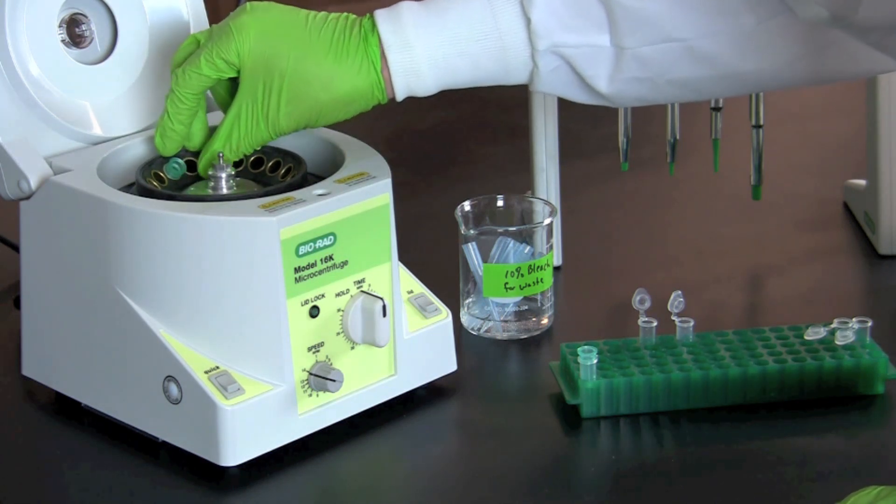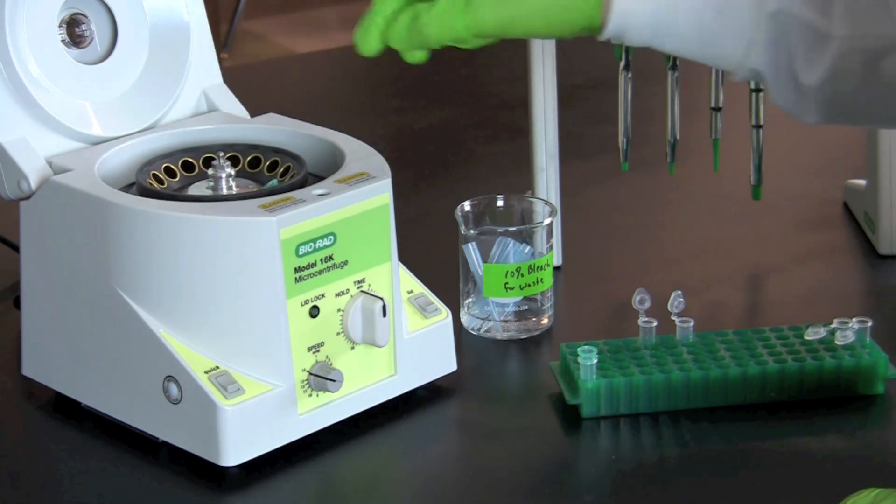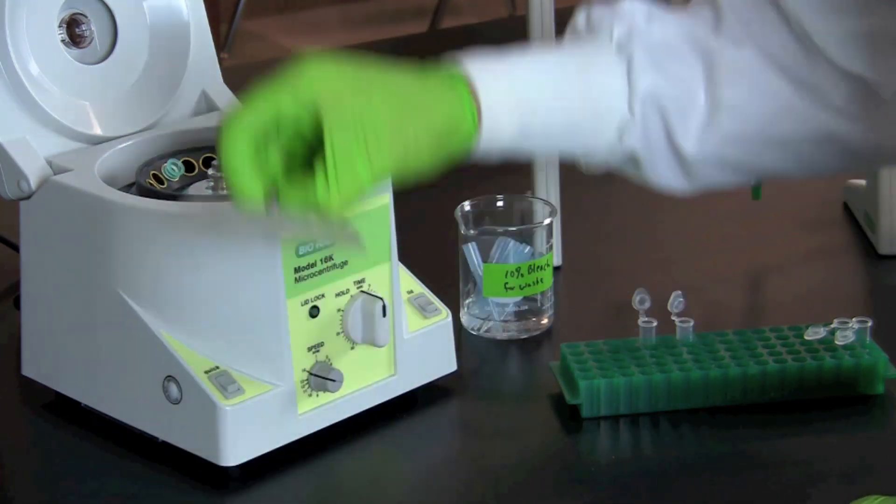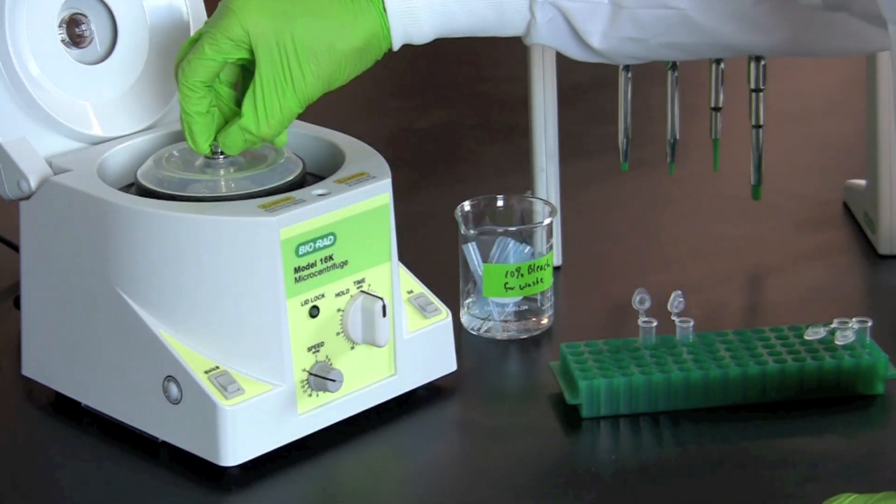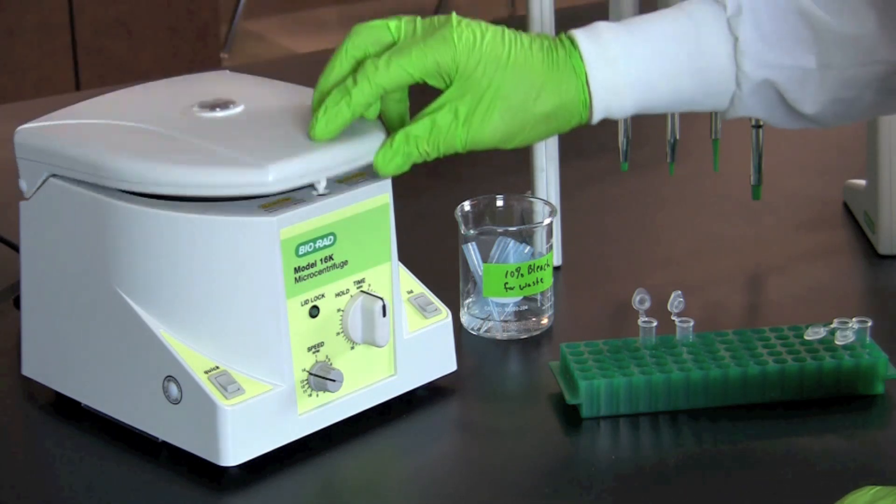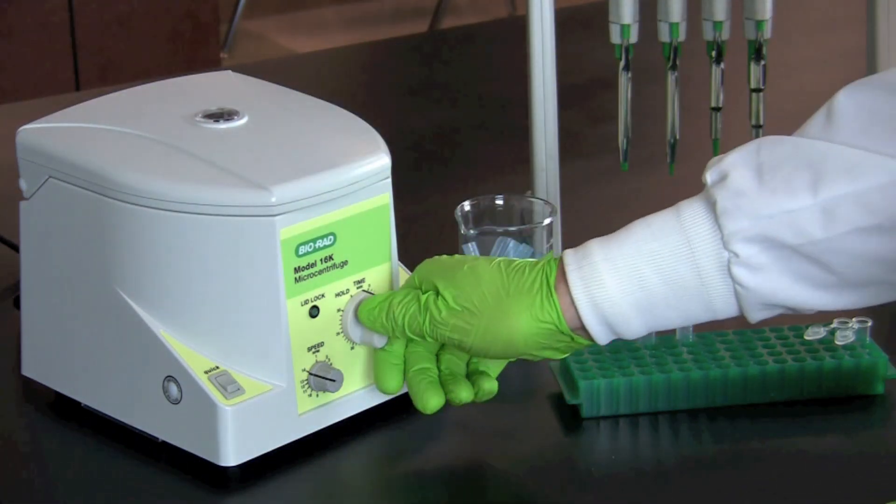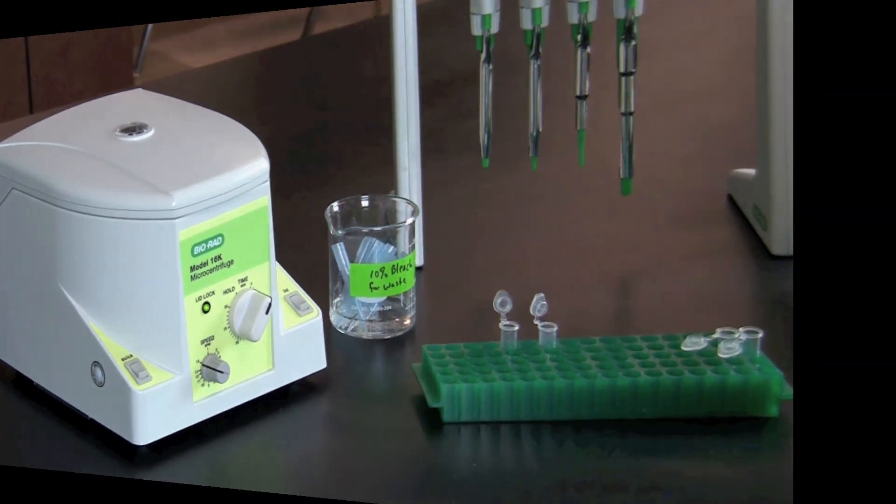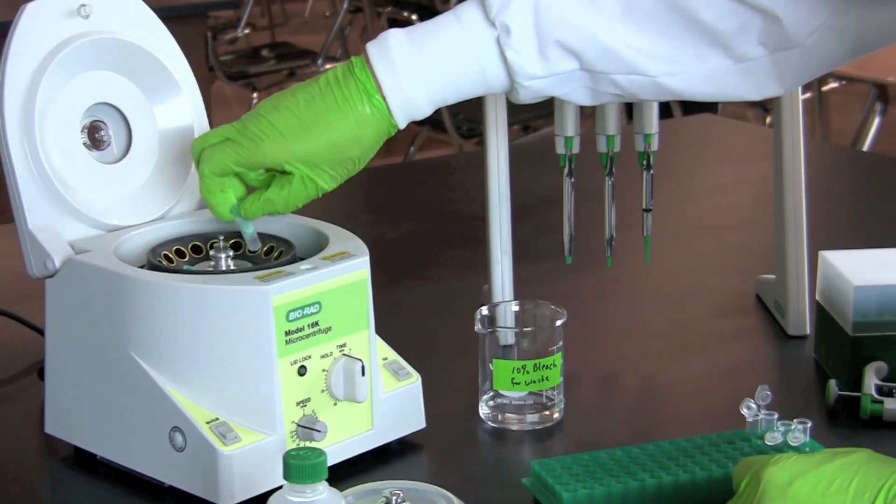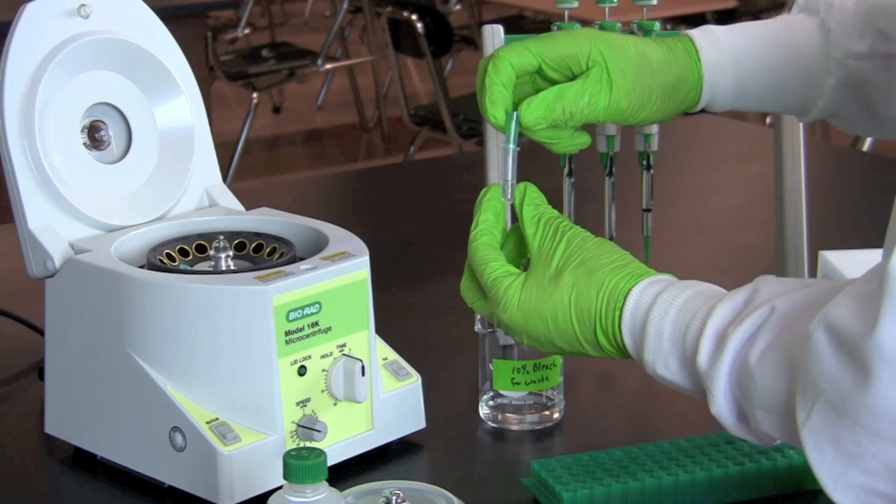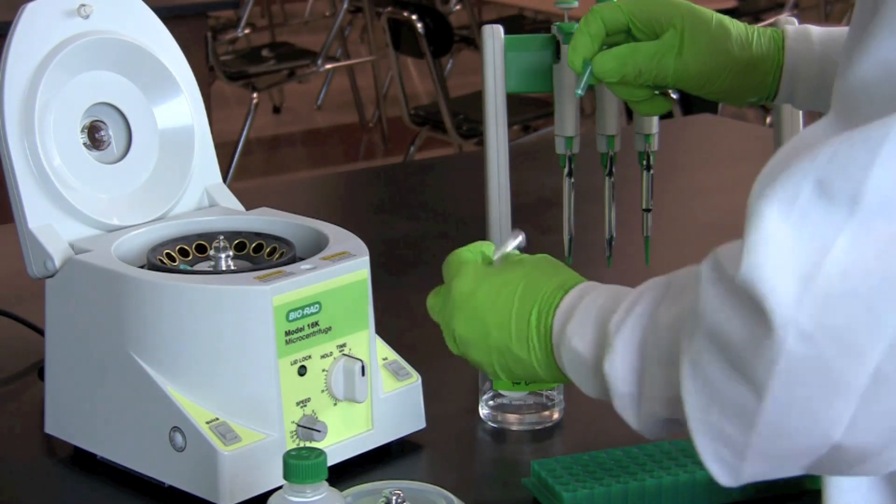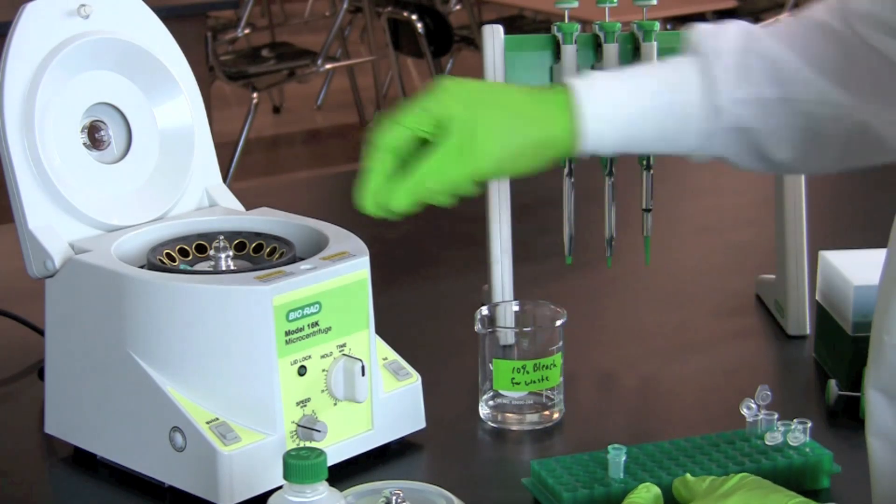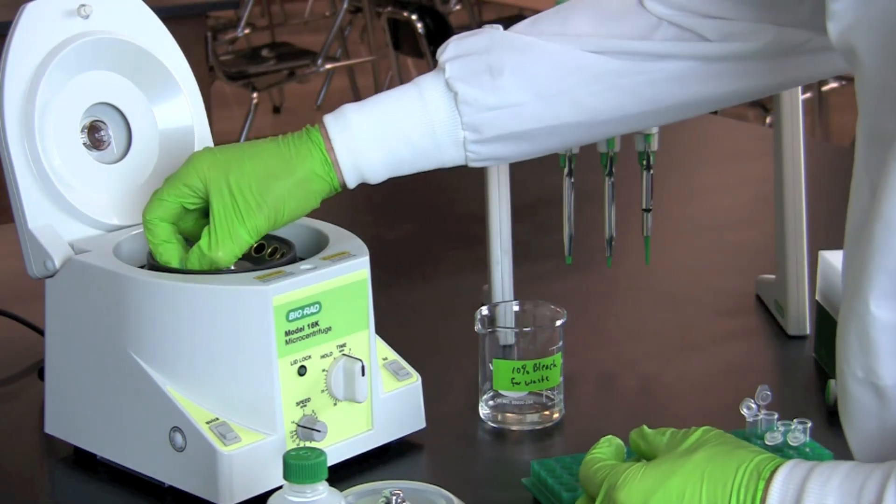Place both green mini columns into the microcentrifuge in a balanced pattern. Spin the columns in the capless collection tubes in the microcentrifuge for one minute at top speed. Take the columns out of the capless collection tube. Discard the liquid flow through and replace the column into the collection tube. Do this with both columns.